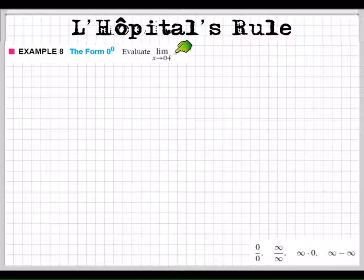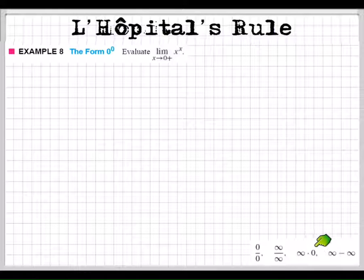First you'd plug in the zero here, you'd get zero raised to zero power. Well actually, that is an indeterminate form. It's just not very common, so it's not in my cool little list down here. Where's my list? There's my list down here. Zero to the zero power is an indeterminate form. So how can we use L'Hôpital's rule to do this one?